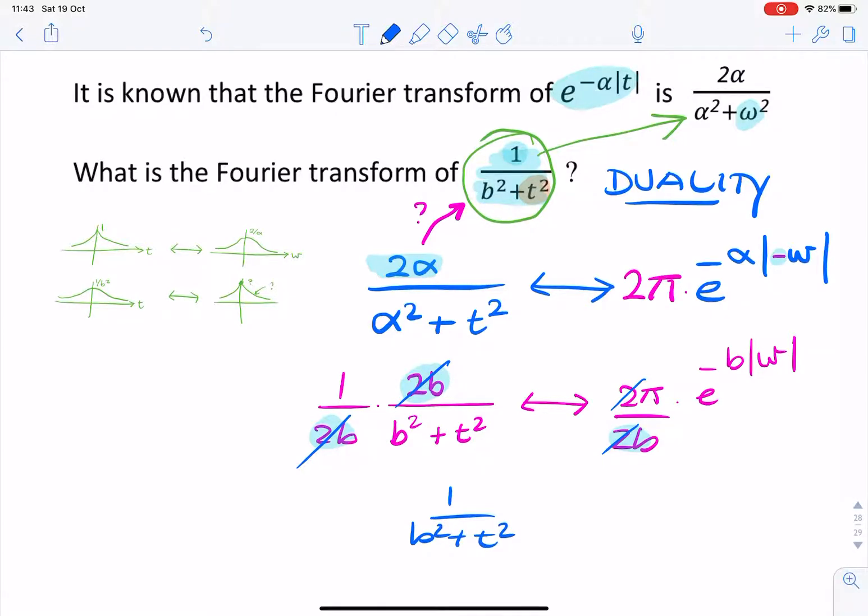And that's the question, the expression in the question. That corresponds to π over b times e to the minus b absolute value of ω.